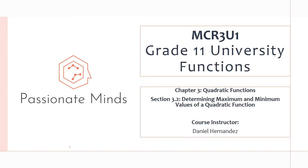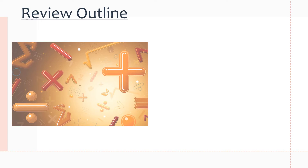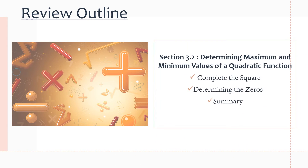Hello everyone, welcome to another MCR3U1 video. In this video we are continuing chapter 3, and we will be going over section 3.2 on determining maximum and minimum values of a quadratic function. Here is the review outline for this lesson. We want to learn how to find the maximum values by completing the square and also by determining the zeros, and then we'll go over a summary of everything we've learned.